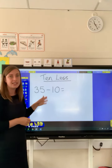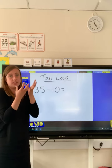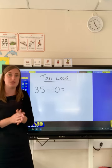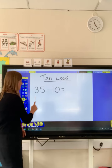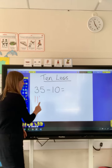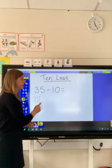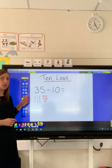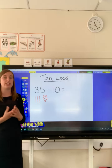We draw the tens and ones for the number 35 — the number that we have. So we've got three tens and we've got five ones. So I've got 35 drawn out there.